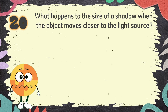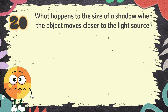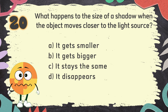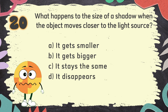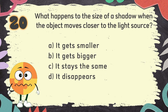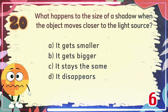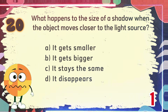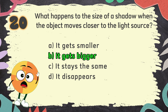Number 20. What happens to the size of a shadow when the object moves closer to the light source? The choices are: A. It gets smaller, B. It gets bigger, C. It stays the same, D. It disappears. The correct answer is B: It gets bigger.